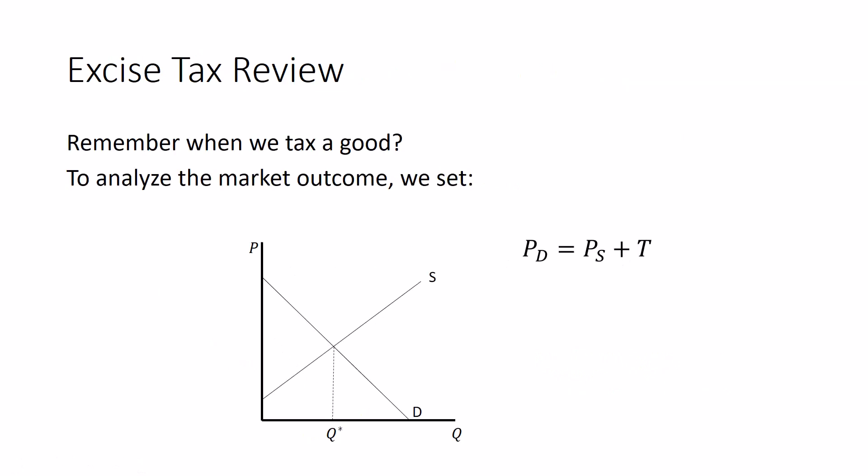An excise tax is a per unit tax that we put on a good. And to analyze the market outcome, we would set the demand price, PD, equal to the supply price, plus the tax. Suggesting that the price demanders pay is different from the price sellers receive. The T between them is a gap between the prices that they pay and receive, and that's the tax.